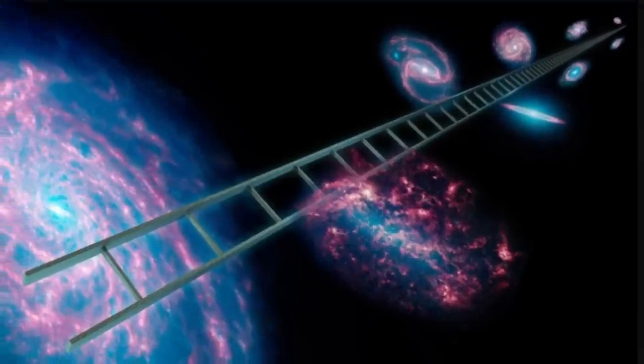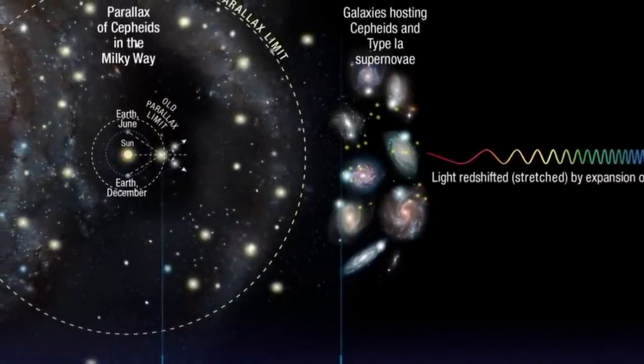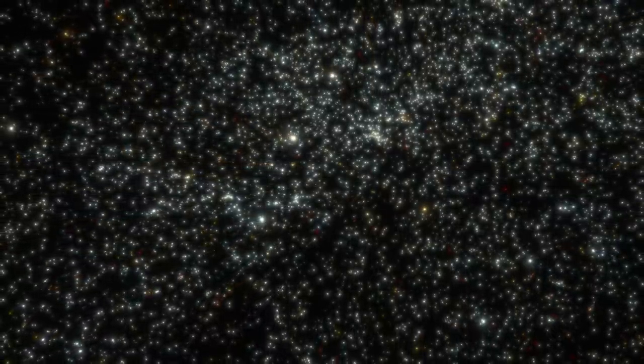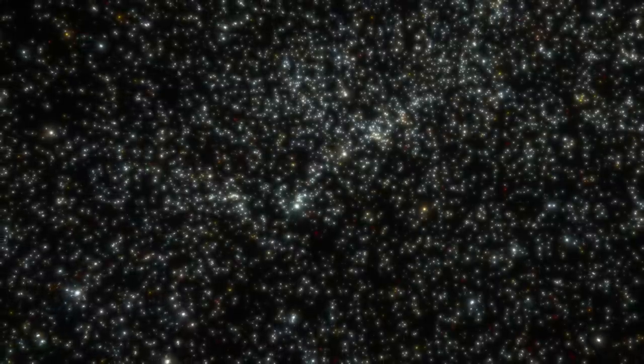By the early 2000s, using Cepheid variables, supernovae, and the Hubble telescope, the value for the Hubble constant — H0 — was determined to be roughly around 72 ± 8 kilometers per second per megaparsec. Basically, for every megaparsec (about 3.26 million light years), the universe expands approximately 72 km/s faster. After a billion parsecs, this value reaches roughly 72,000 km/s, and as you go farther, you eventually reach the speed of light — the limit of the observable universe.